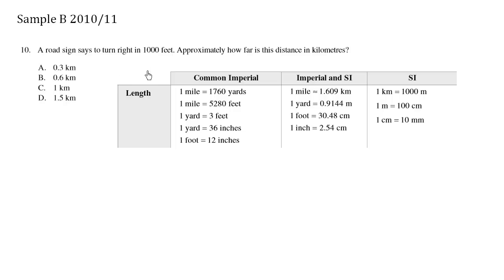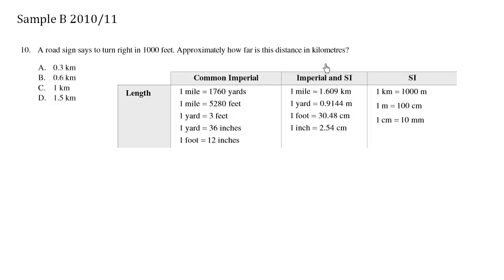A road sign says to turn right in 1000 feet. Approximately how far is this distance in kilometers? We want to convert feet to kilometers. Using the data pages in the back, I don't see a direct conversion between feet and kilometers — I see feet to yards, feet to inches (one foot equals 12 inches), but no direct conversion to kilometers, so we need to find an indirect conversion.